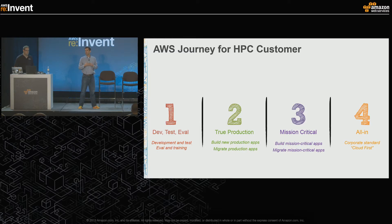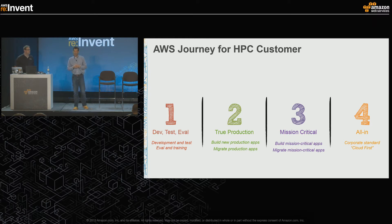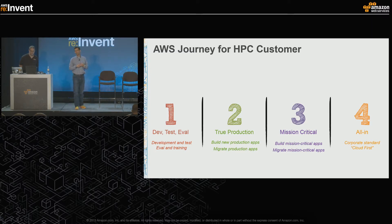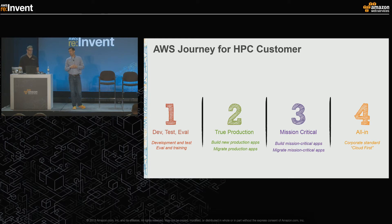Moving to true production - perhaps you need to spin up a new Windows HPC application but have no available resources and no capital allocated for this spike. Rather than procuring infrastructure, you launch the application directly in the cloud. Then mission-critical applications - the cost benefits and agility of the cloud drive the decision to move that first mission-critical HPC application into AWS. And lastly is the all-in, cloud-first approach: when deploying applications, everything moves to the cloud, and as existing assets cycle off, those resources migrate to the cloud over time.